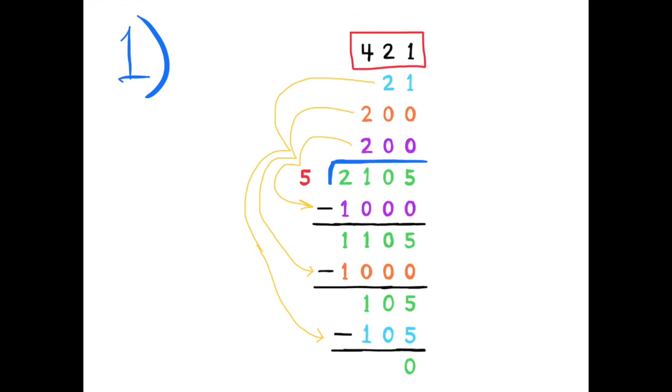In the very center of this illustration you see 2,105 written in green divided by 5, and the 5 is written in red. Above it you see a purple 200. 200 times 5 equals 1,000, so 2,105 minus 1,000 equals 1,105 written in green. Above the purple 200 you see the orange 200. 200 times 5 equals 1,000, so 1,105 written in green minus the 1,000 written in orange equals 105.